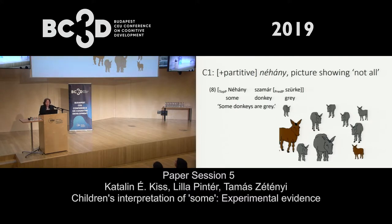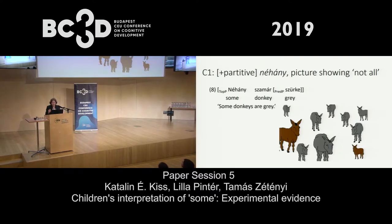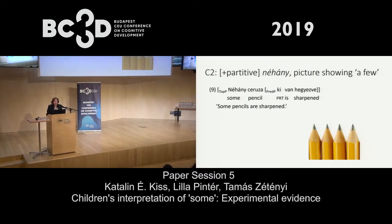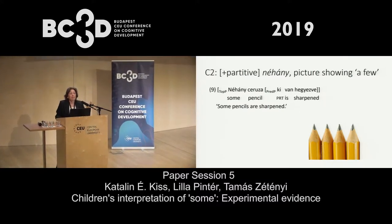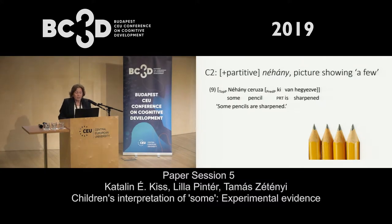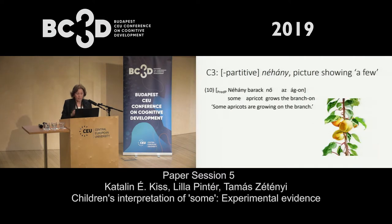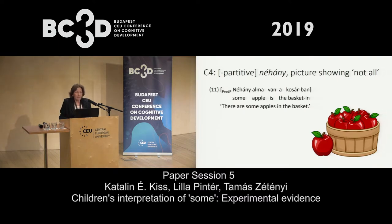Condition one: the 'some' phrase occurred in a partitive context and the picture showed the 'not all' reading — for example, 'some donkeys are grey,' where only a subset of the donkeys are grey. Condition two: 'some' phrase in a partitive context, but the picture shows the 'a few' reading — for example, 'some pencils are sharpened.' Condition three: 'some' phrase in a non-partitive context matched with an 'a few' picture — for example, 'some apricots are growing on the branch' (a stressed 'some' phrase). Condition four: 'some' phrase in a non-partitive context, picture showing the 'not all' reading — for example, 'there are some apples in the basket.'